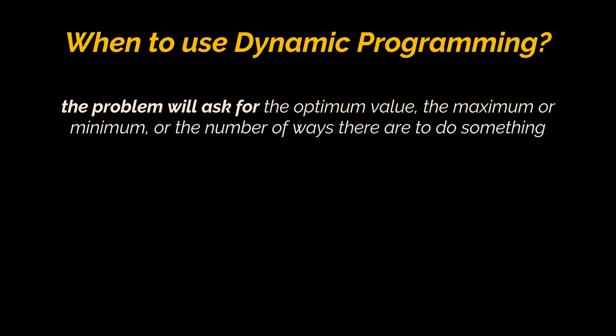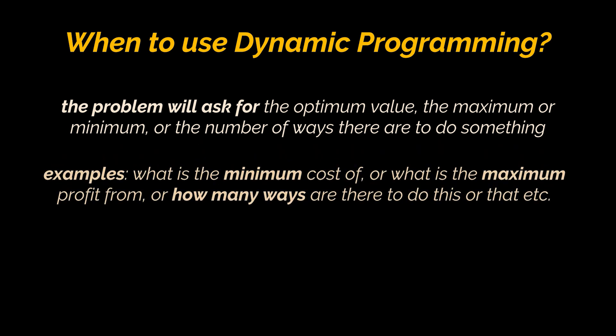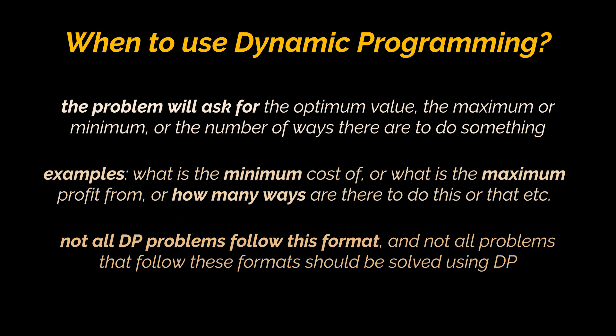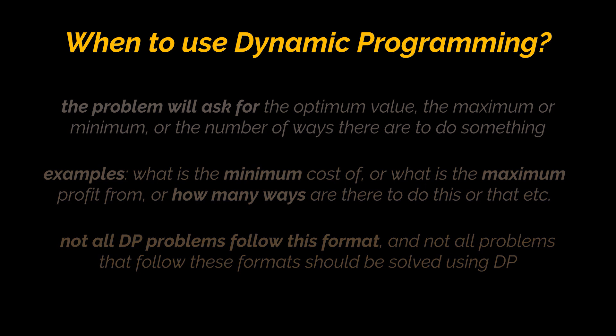The first characteristic common in DP problems is that the problem will ask for the optimum value — maximum or minimum of something — or the number of ways there are to do something. For example: what is the minimum cost of doing something? What is the maximum profit? How many ways are there to do this? What is the longest possible? Keep in mind that not all DP problems follow this format, but these formats are a strong hint to consider dynamic programming.